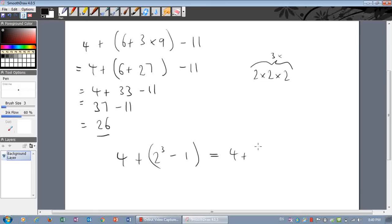So, that's equal to 4 plus 8 minus 1. 8 minus 1 is 7, so that's 4 plus 7. So, the answer is 11.